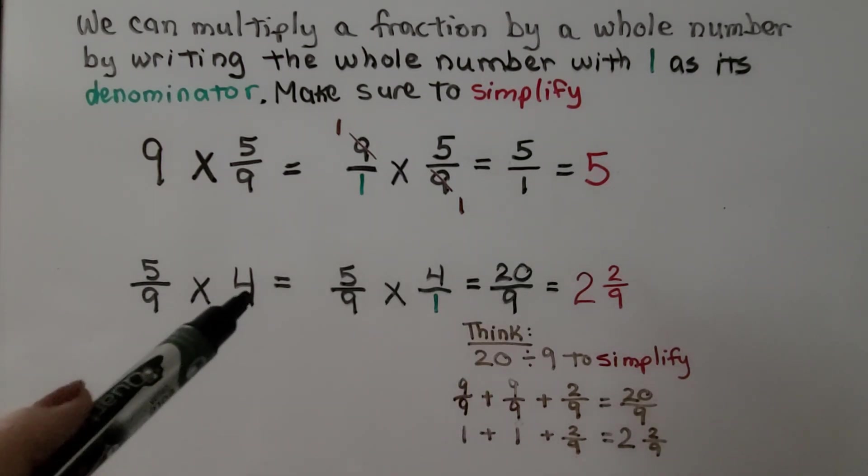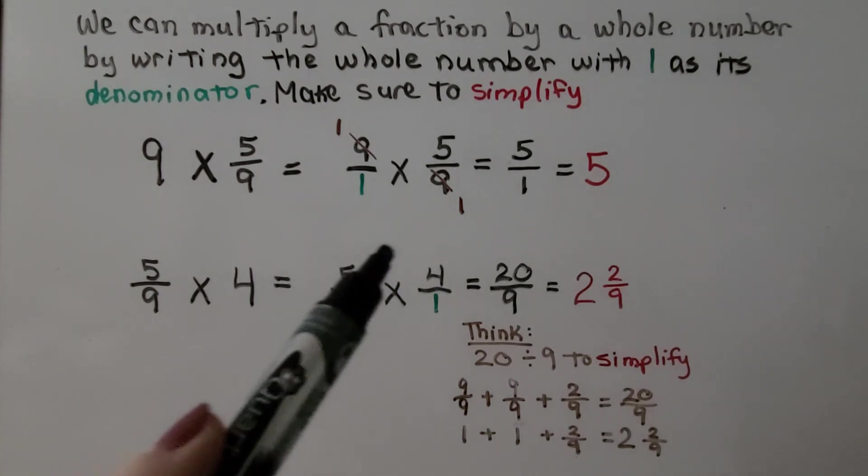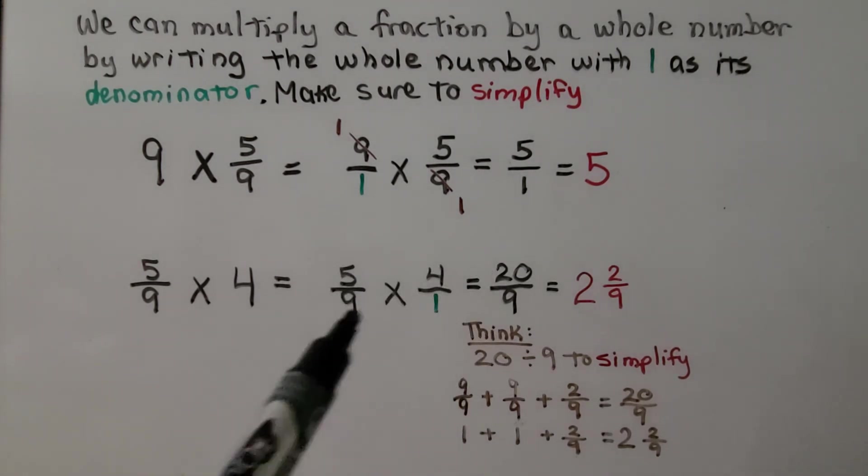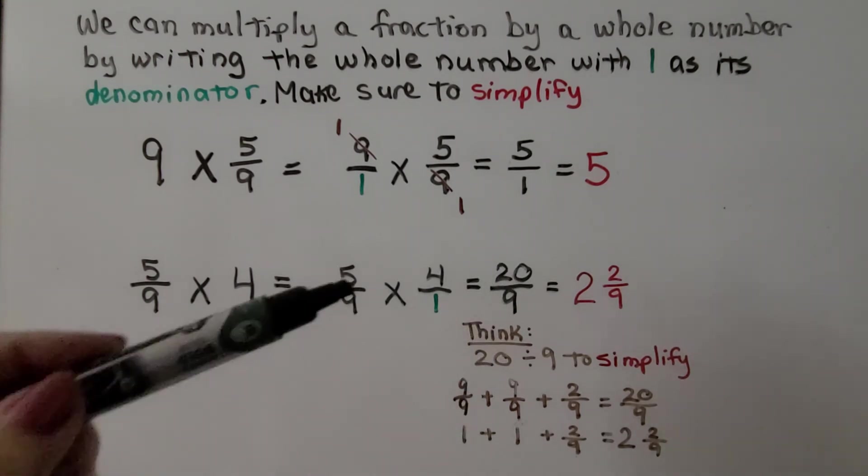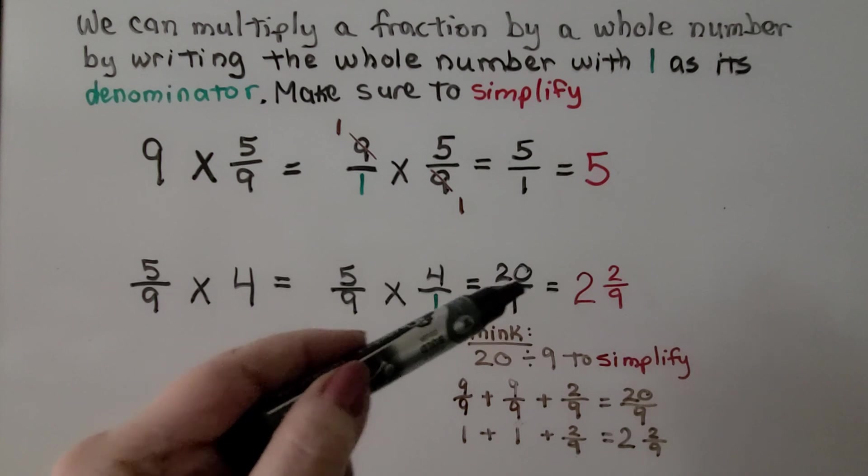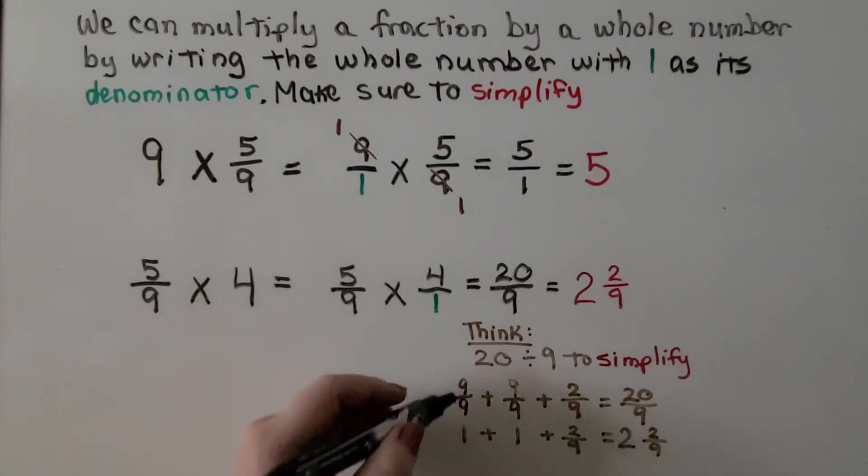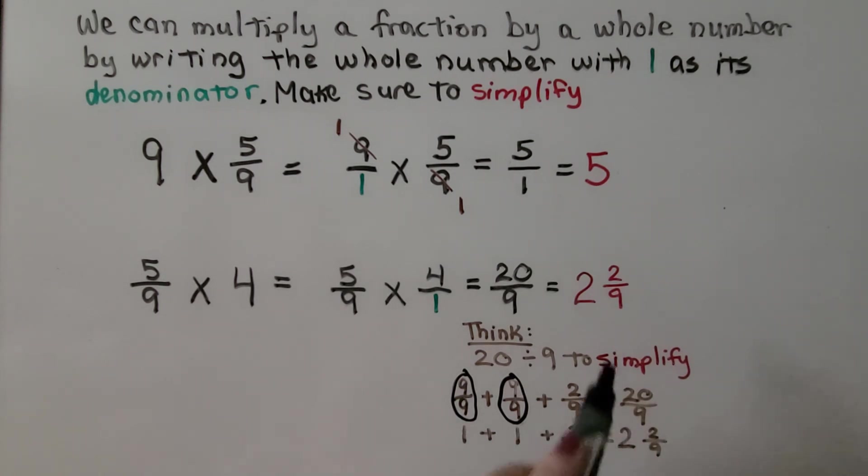Here we have 5 ninths times 4. We do 5 ninths times 4 over 1. We have 5 times 4, which is 20, and 9 times 1, which is 9 because they don't have any common factors. We just multiply straight across. We have 20 ninths. And we think of that fraction bar as a division sign. 20 divided by 9 to simplify. 9 ninths equals 1 whole. And if we have another 9 ninths as another 1 whole, that's 18 ninths. 2 more ninths would be 20 ninths. That means we have 1, 2, and 2 ninths when it's simplified. We'll get into this more in the next lesson.